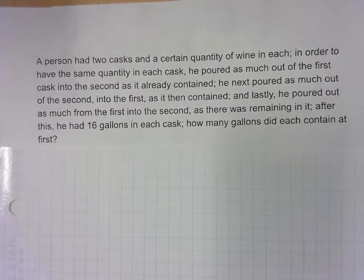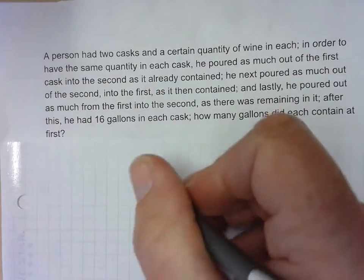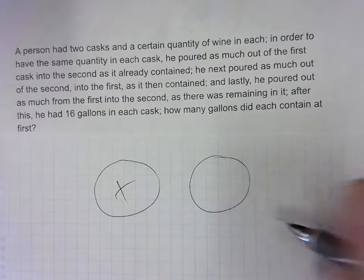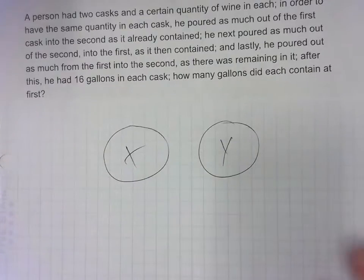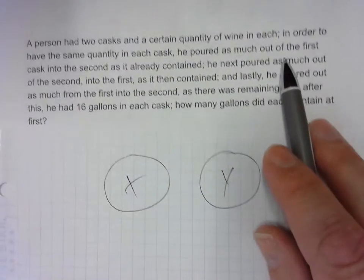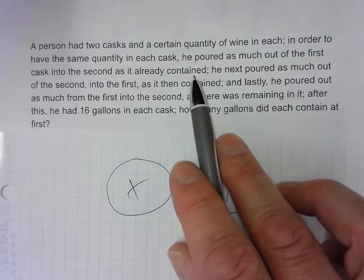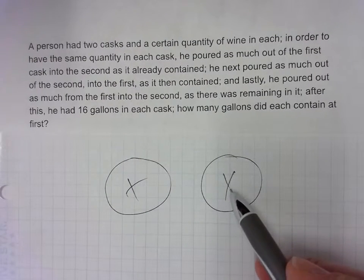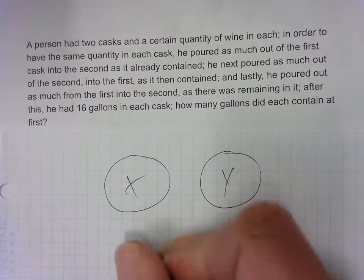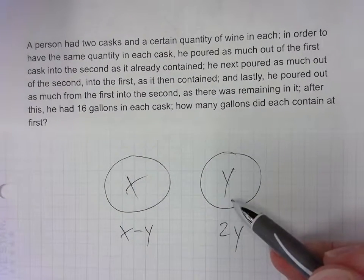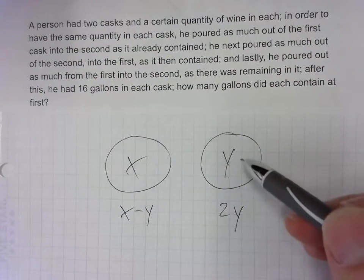So we're going to make our two casks of wine here. So here's my first cask of wine. And we'll say there's X amount in here. And here's my second cask of wine, like a barrel of wine. And there's Y in here. All right. So the first thing we do is we pour as much out of the first cask into the second as it already contained. So that means we're doubling the amount in here. So we're taking Y out of this and doubling it. So this is now X minus Y. And then now this is 2Y because we took as much out of here to here to double it.